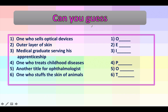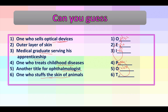Now let's review. One who sells optical devices is an optician. The outer layer of skin is the epidermis. A medical graduate serving apprenticeship is an intern. One who treats childhood diseases is a pediatrician. Another title for ophthalmologist is oculist, though this word is not used much in modern language. One who stuffs the skin of animals is a taxidermist. I hope you can solve at least four or five out of six.